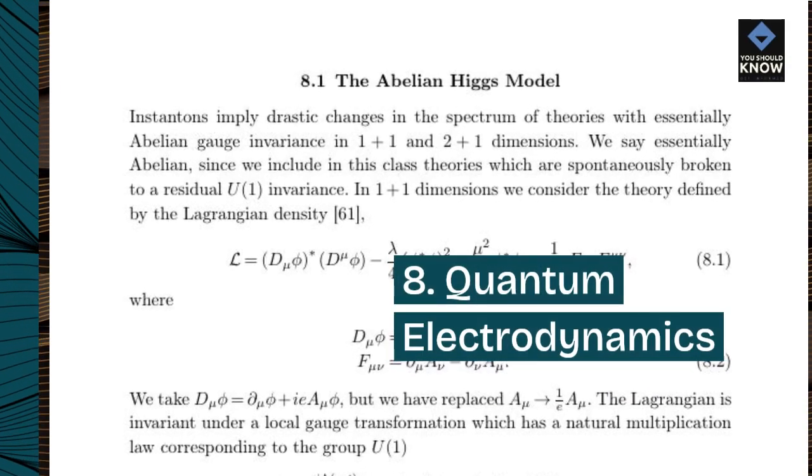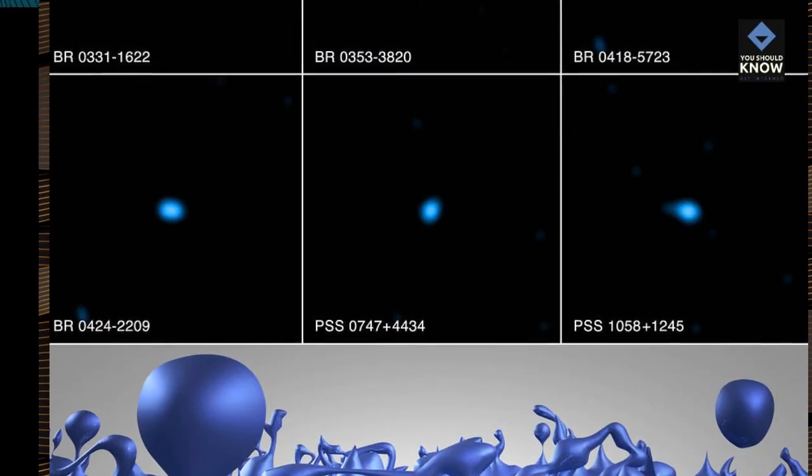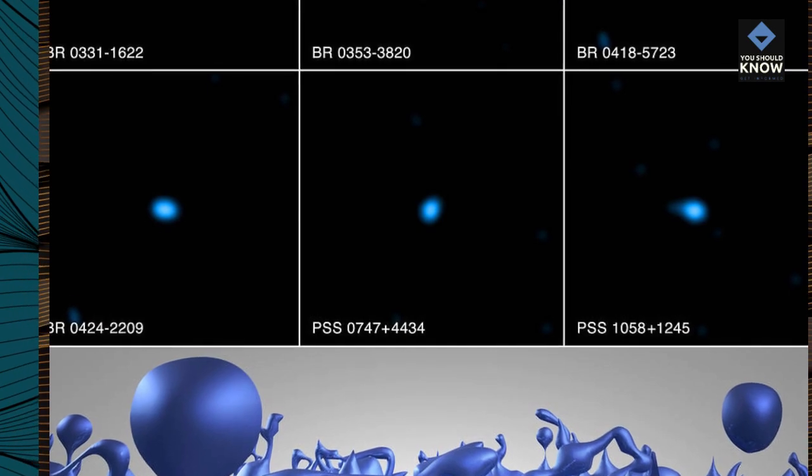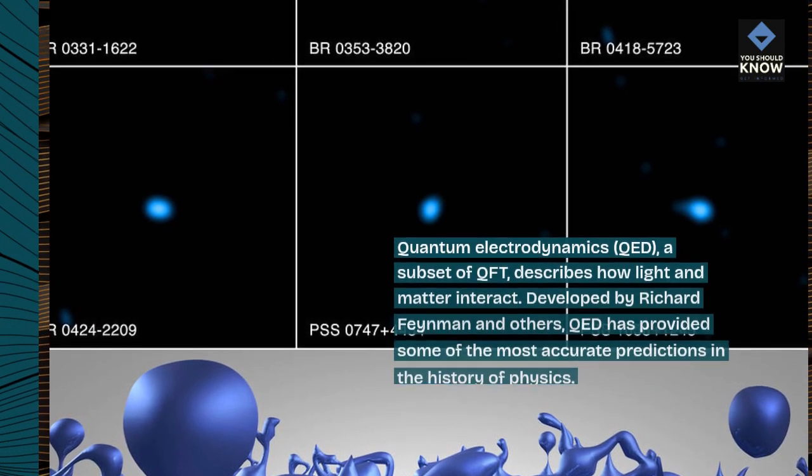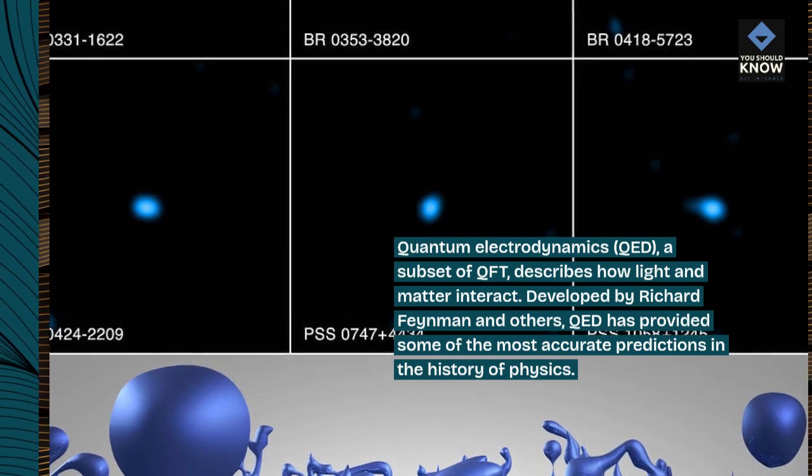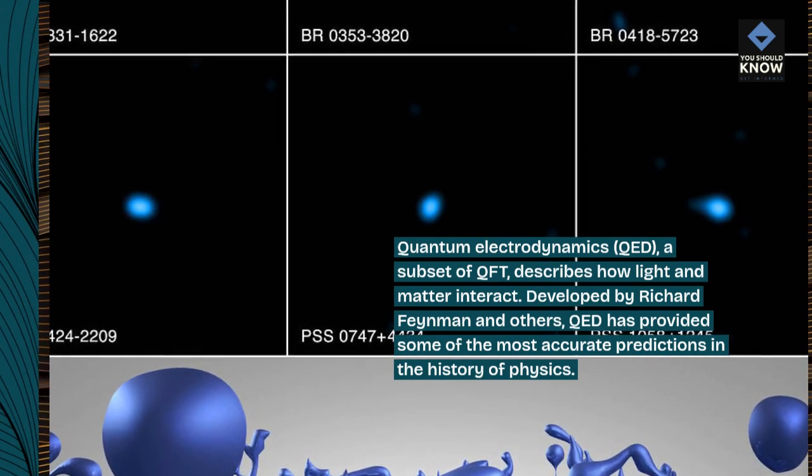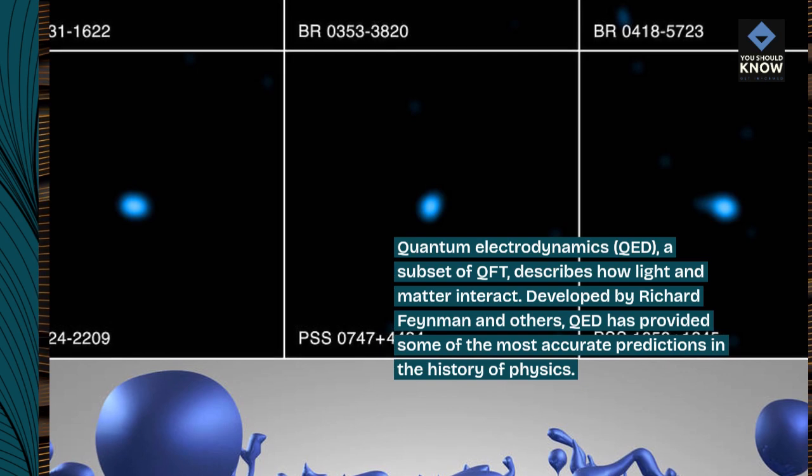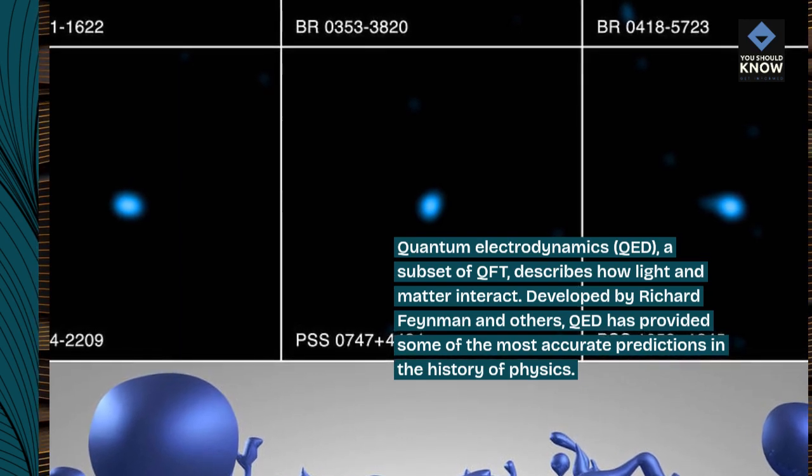8. Quantum Electrodynamics. Quantum Electrodynamics (QED), a subset of QFT, describes how light and matter interact. Developed by Richard Feynman and others, QED has provided some of the most accurate predictions in the history of physics.